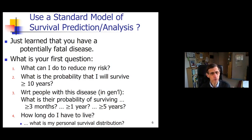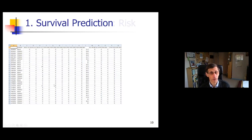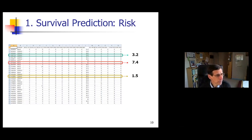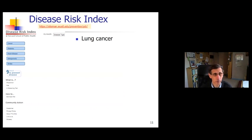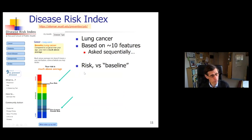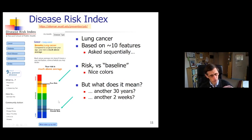What can I do to reduce my risk? What's the probability I'll survive at least 10 years? Of people with this disease, what is their chance of living at least three months, at least one year, at least five years? Or the question most people will say is, how long do I have to live? What's my personal survival distribution? It turns out there are tools for each of these. One is in the context of survival predictions, understanding risk. This gives a number which gives some idea of who will die first.